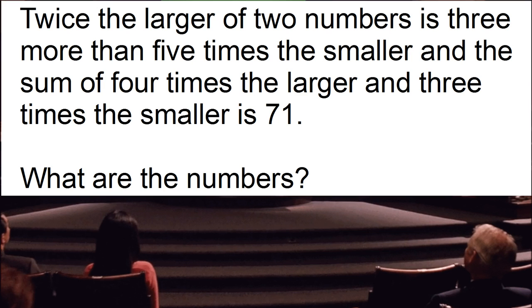Twice the larger of two numbers is three more than five times the smaller. And the sum of four times the larger and three times the smaller is 71. What are the numbers?